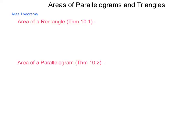This is theorem 10.1 and it states that the area of a rectangle is the product of its base and height. You see this as A equals b times h. Some people also give this as length times width or other characteristics but the idea is the same.